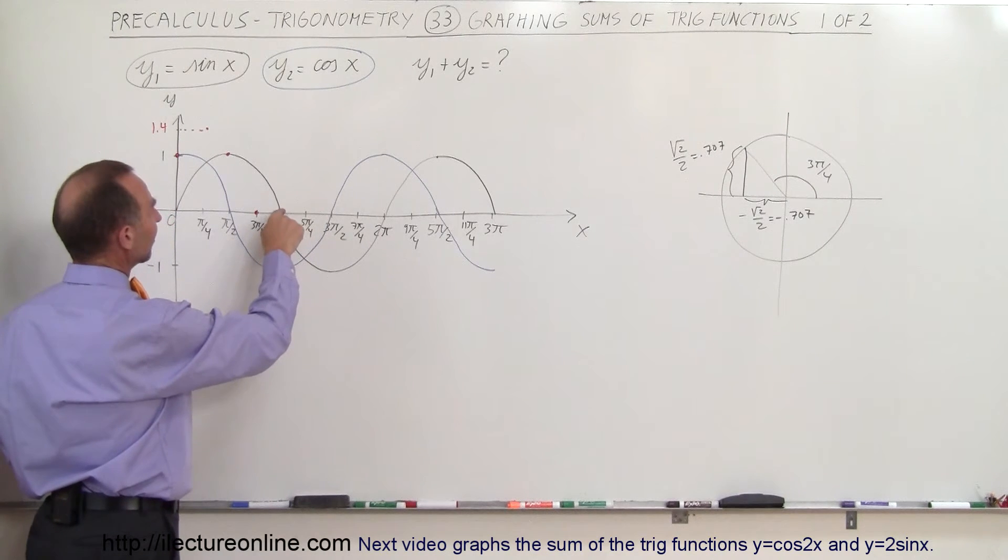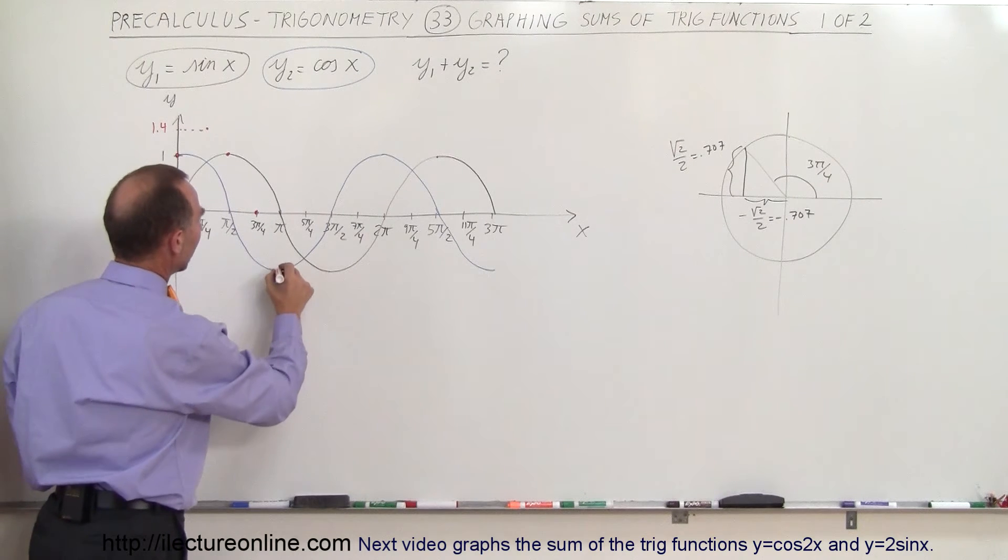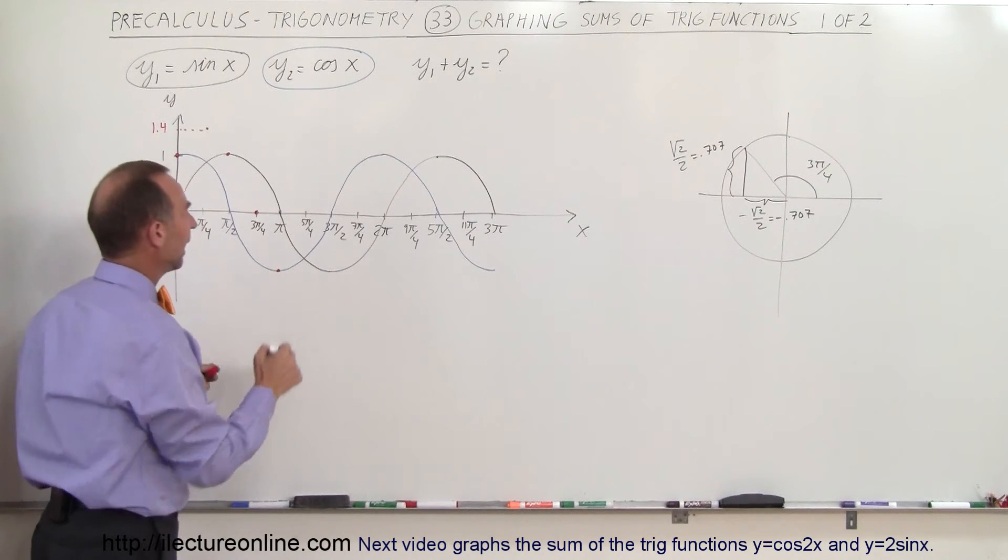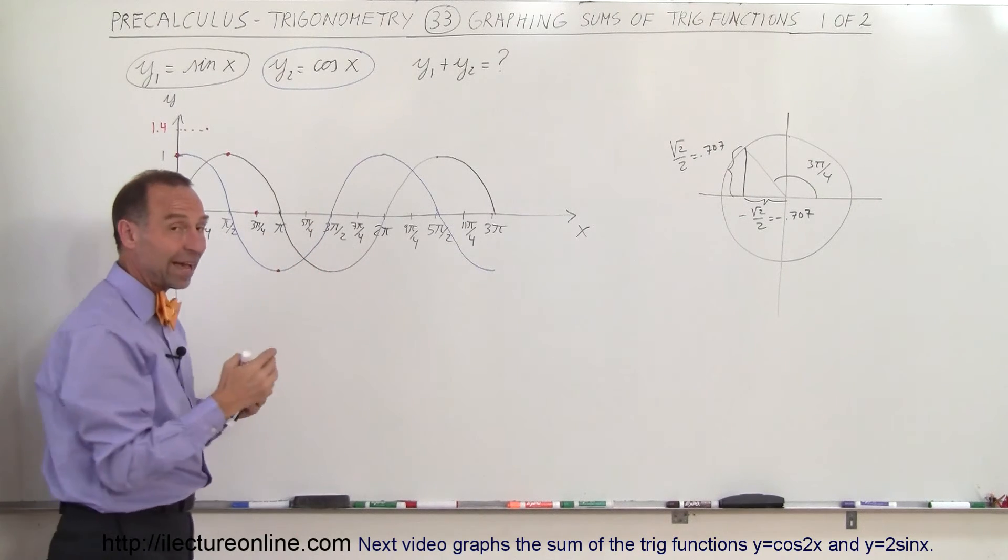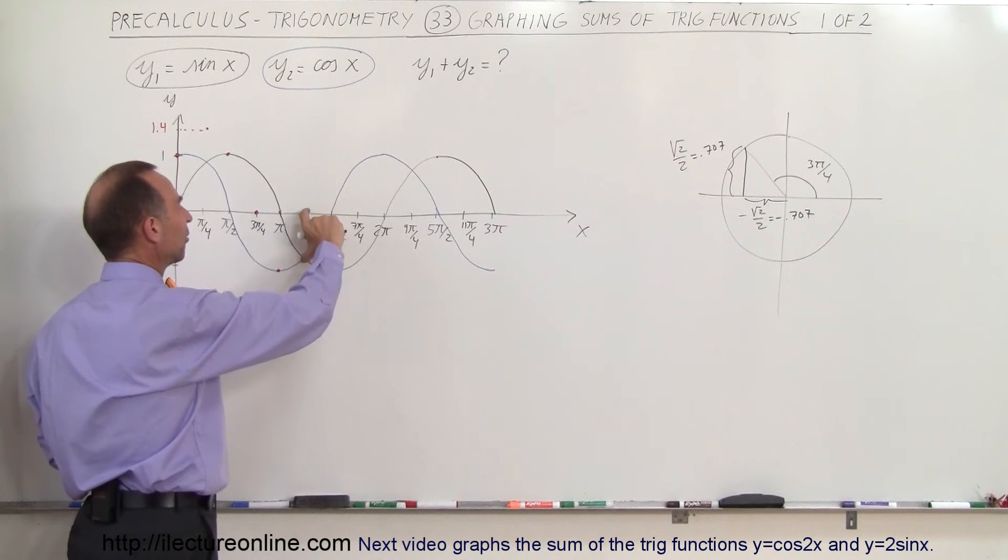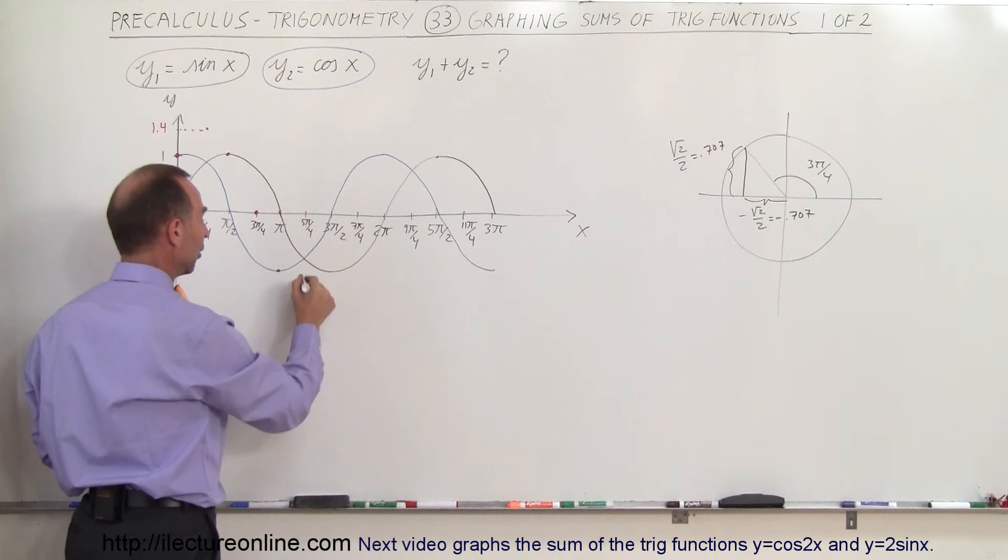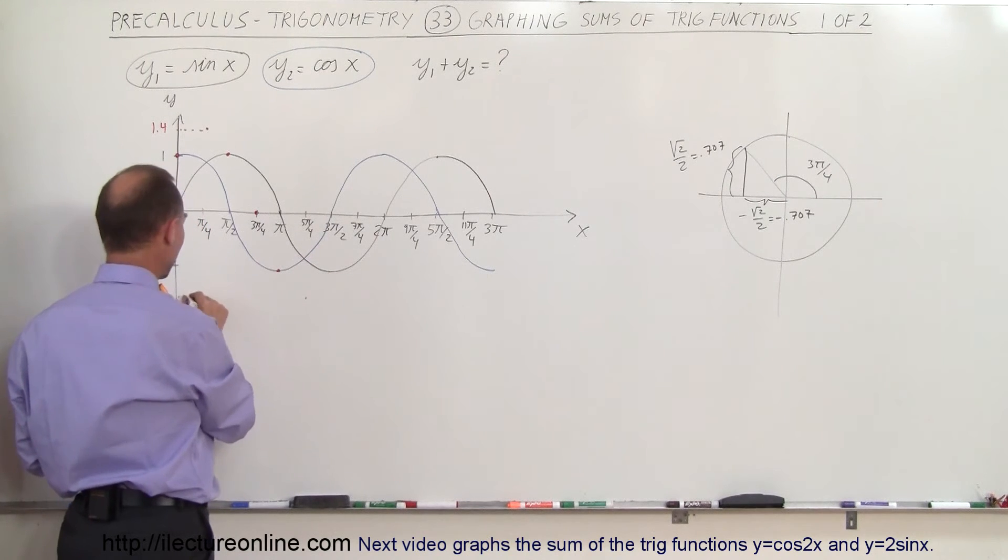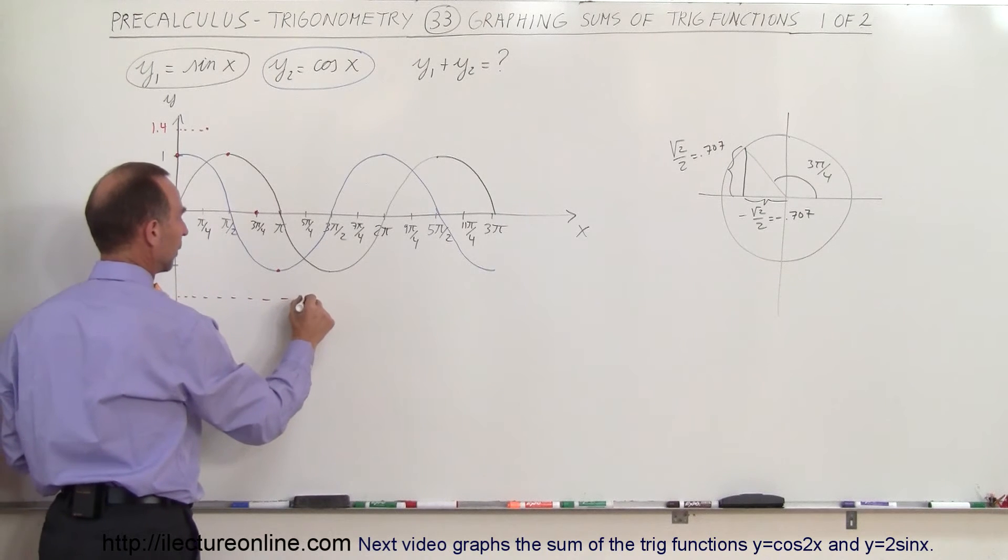Over here at pi, see that the sine is 0 and the cosine is negative 1, which gives you a value of negative 1. And over here at 5 pi over 4, both the cosine and the sine are at 45 degrees, or a better way to say it is that the value of the sine and the cosine is minus square root of 2 over 2, or 0.707, but in a negative direction. So add them both together, and you get a value of about minus 1.4 right there.